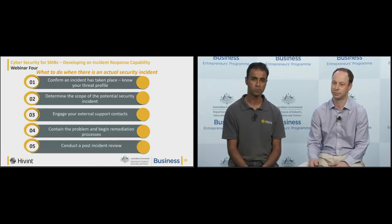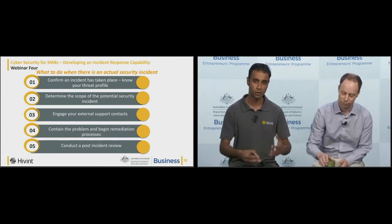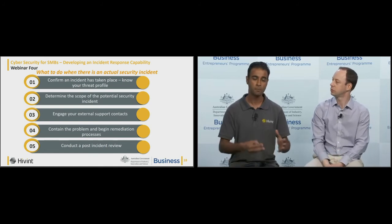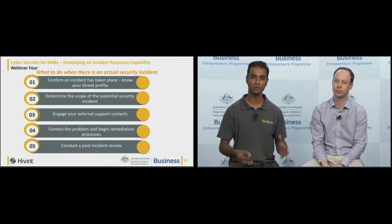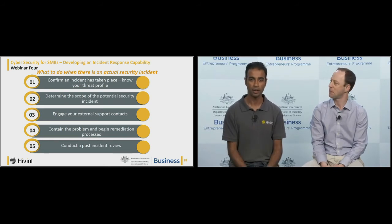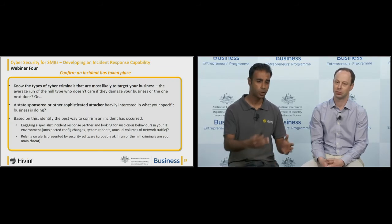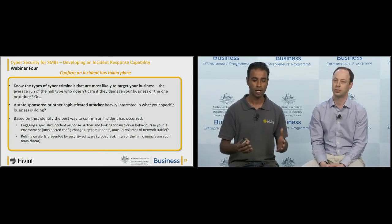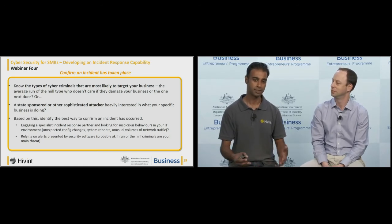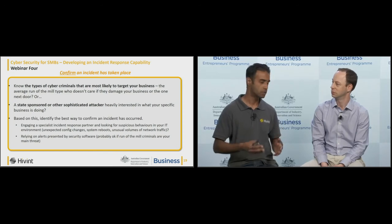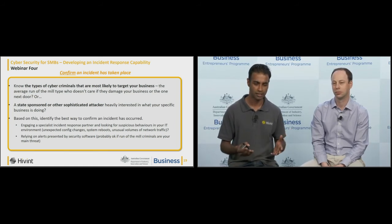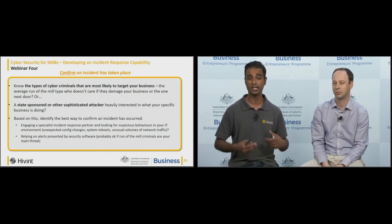The second part of the incident response process is knowing what steps to follow should you experience a security incident. The first step is confirming that an incident has actually taken place. Knowing the best ways to confirm this really depends on the nature of your business and the type of cyber criminal most likely to target you. If you're most likely to be targeted by a sophisticated cyber criminal specifically interested in your business activities, the steps you take will vary from a business more likely to face a run-of-the-mill cyber criminal simply interested in succeeding in some form of attack.